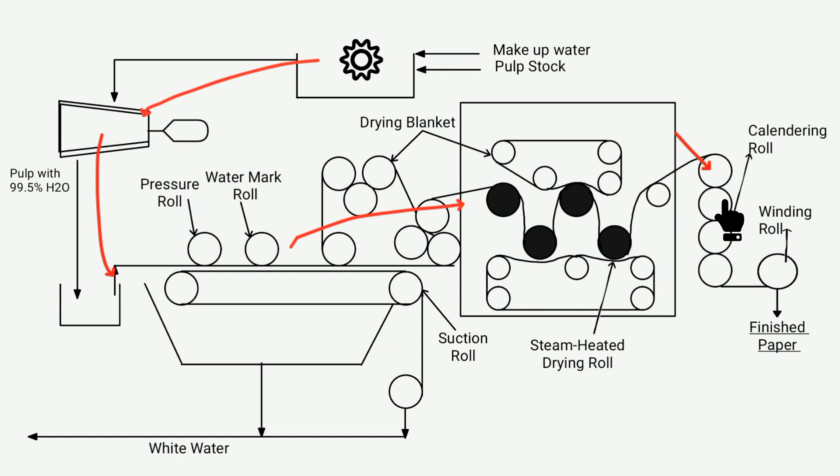Lastly, the paper sheet's finishing is done using calendaring rolls to smooth the paper surface, the paper is then wound onto winding rolls.